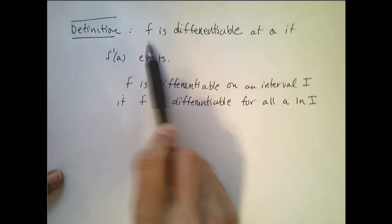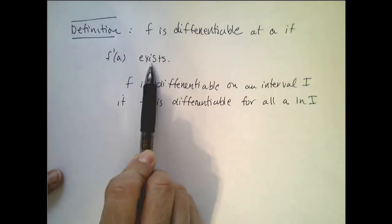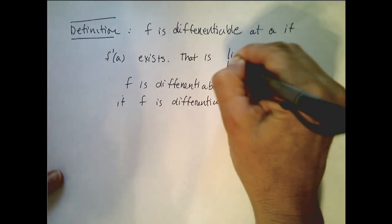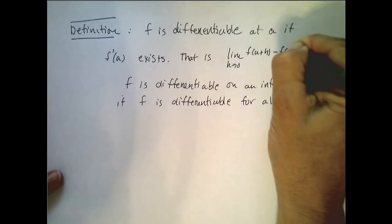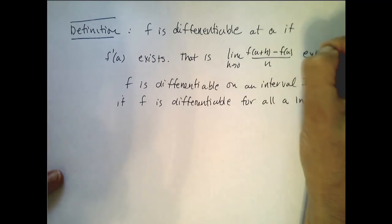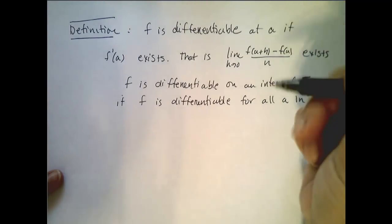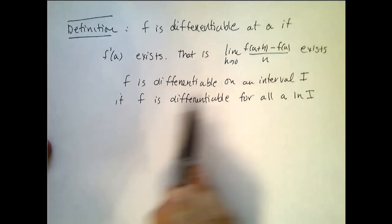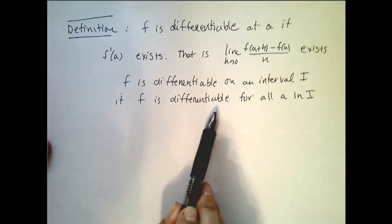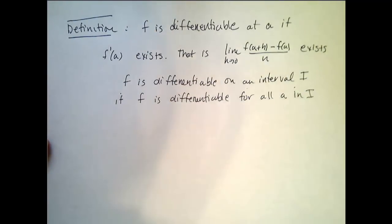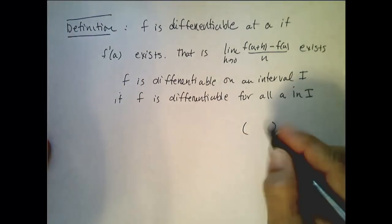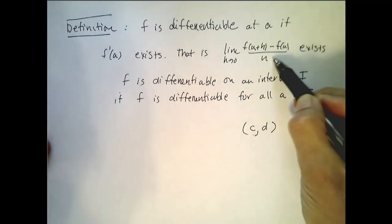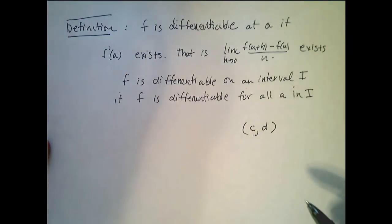We say f is differentiable at a if f prime of a exists — that is, the limit as h goes to 0 of f of a plus h minus f of a all over h exists. If this limit exists at a particular a, then we say the derivative exists at a. Now f is differentiable on an interval i if f is differentiable for all a in that interval. So if I pick an interval from c to d, and for every value in this interval this limit exists, then f is differentiable on that interval.